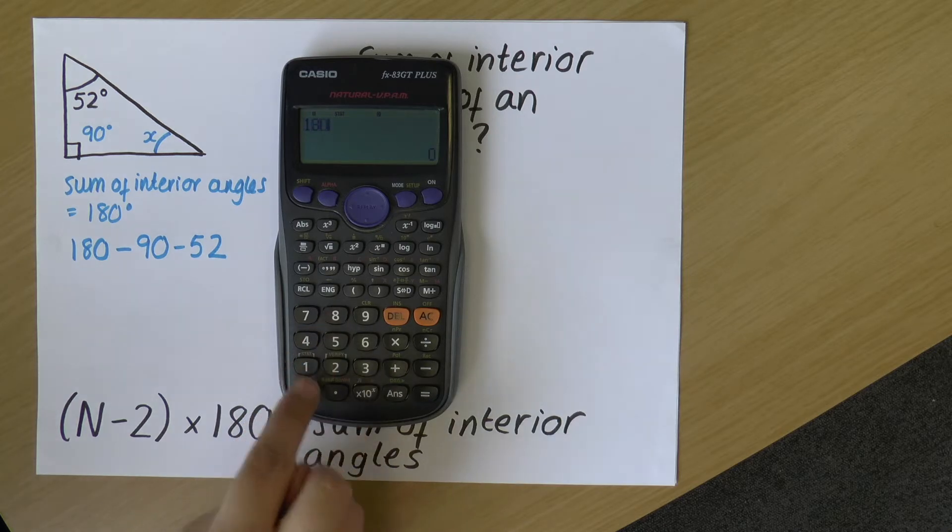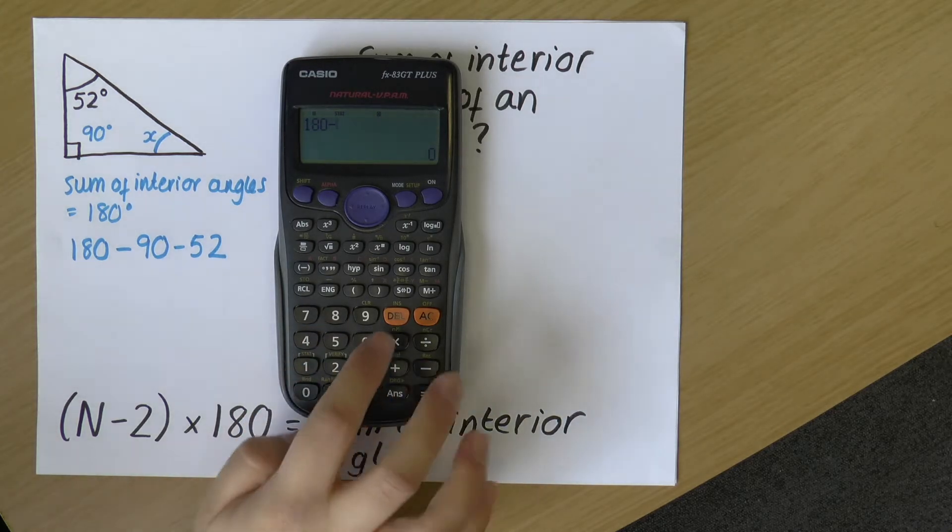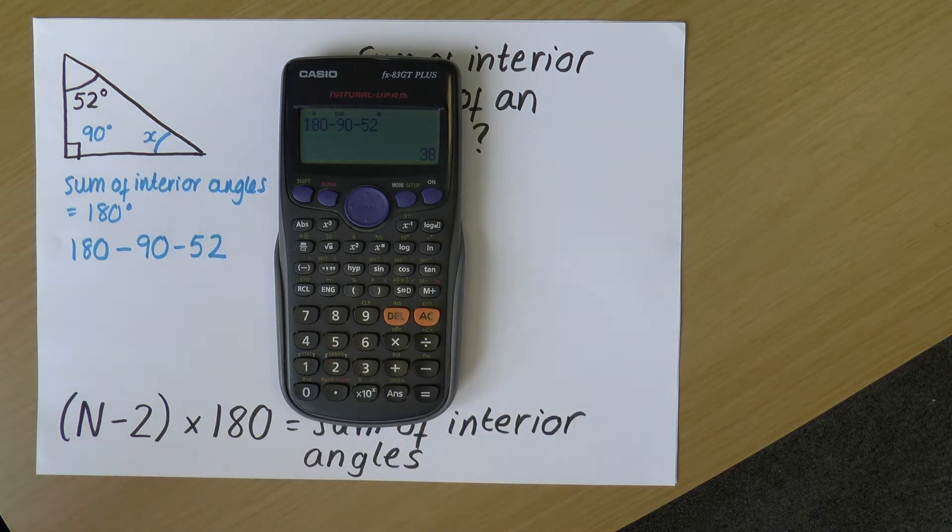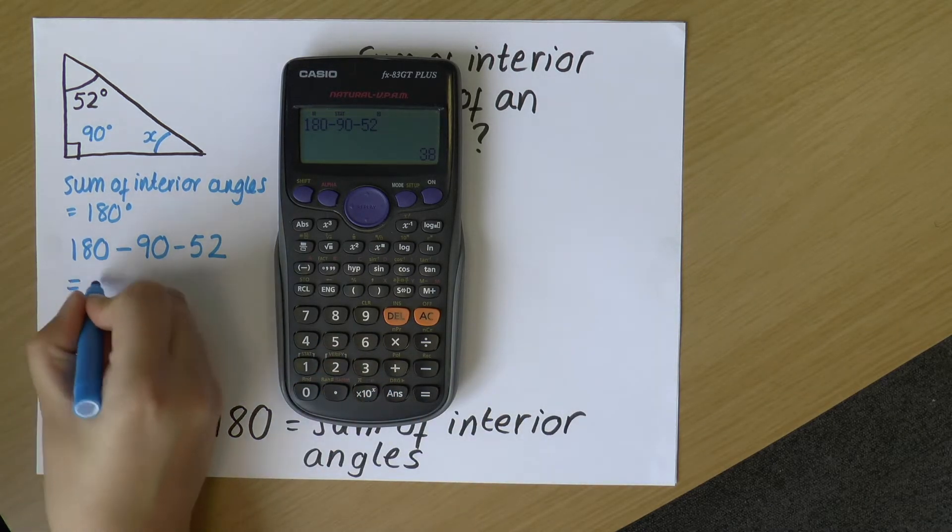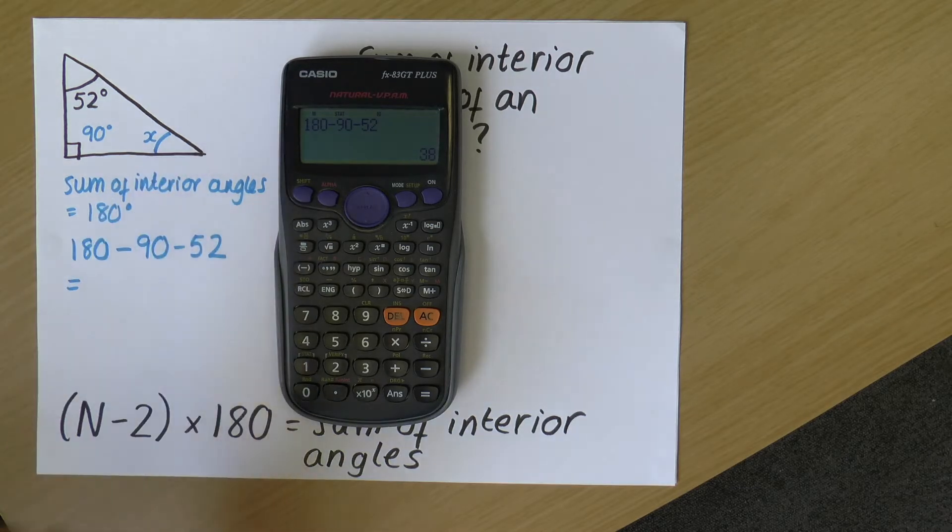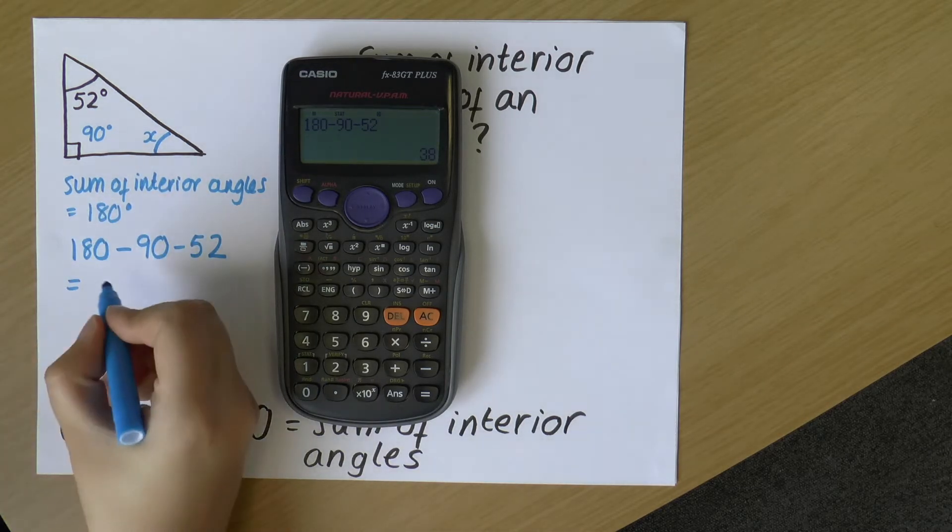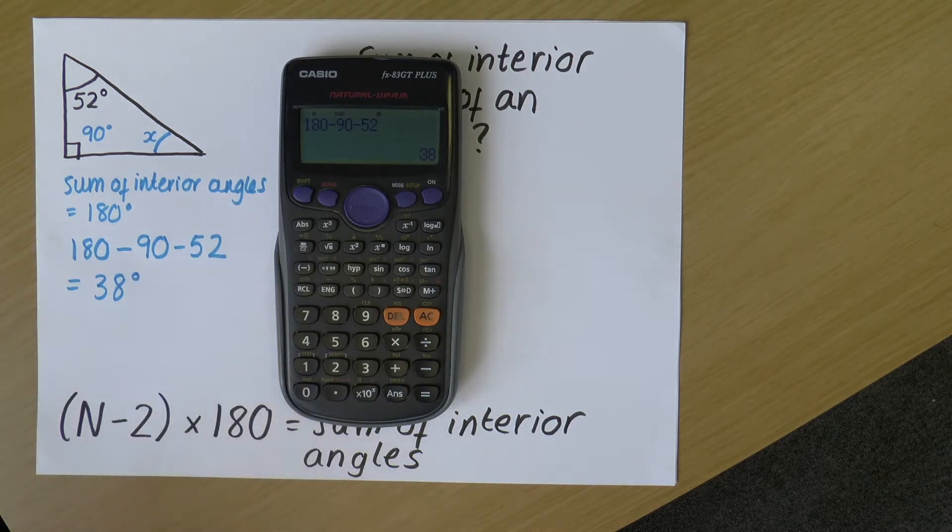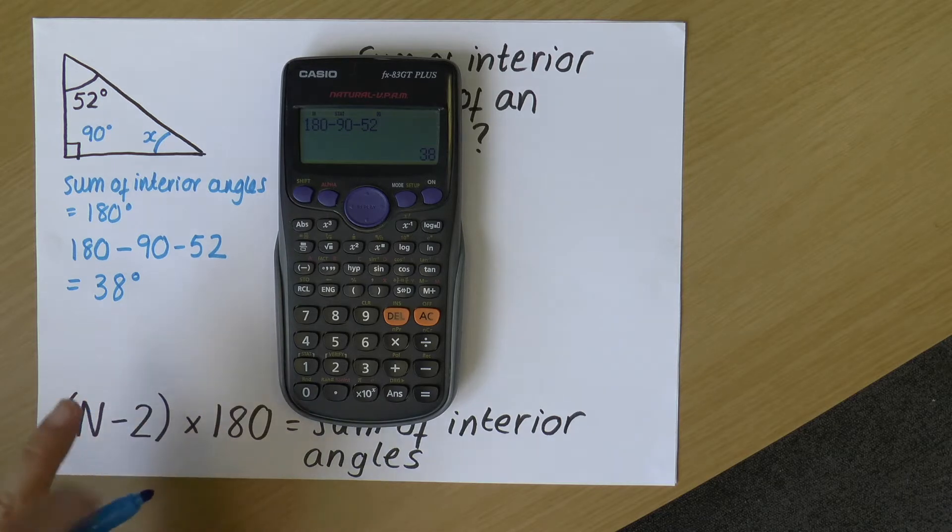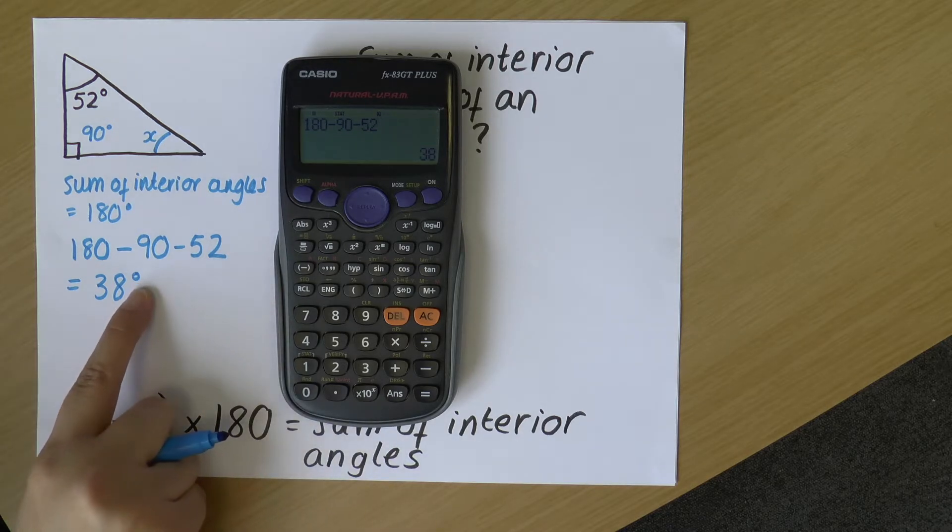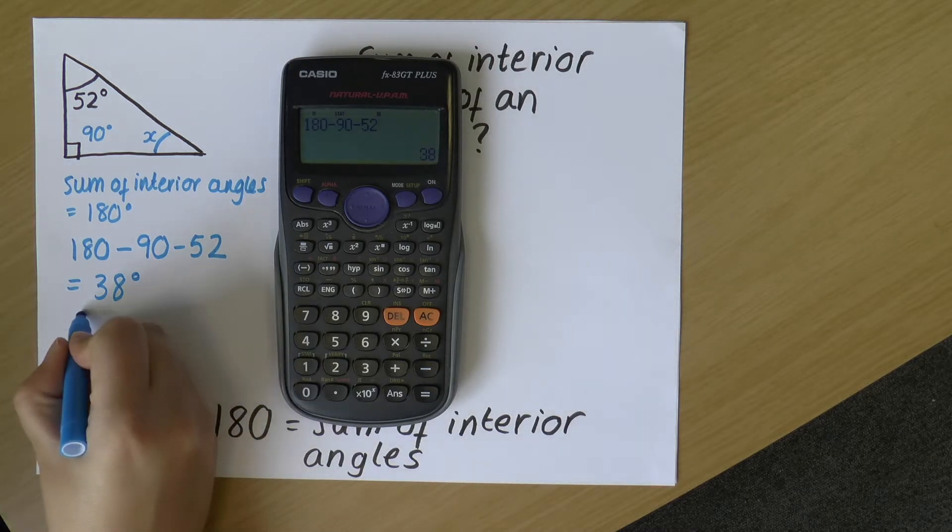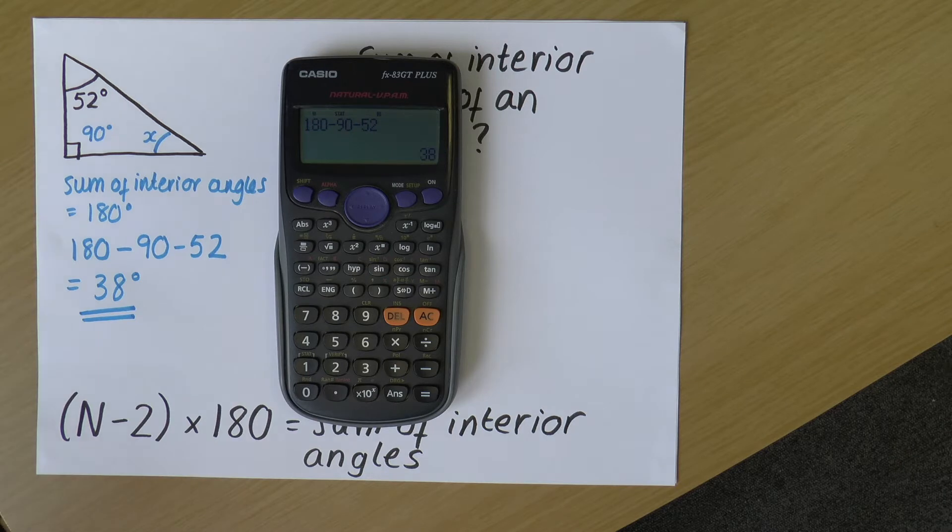I'm doing 180 minus 90 minus 52. And that gives me my angle here, my angle x, which is 38. And that's in degrees. So remember, when we've got angles, they're usually in degrees. So that little symbol, the little O looking symbol up there means degrees. So that is my missing angle in that triangle.